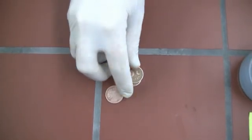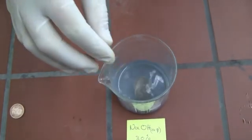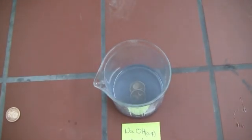Then we put the coins in a beaker with a solution of sodium hydroxide and 1.5 gram of zinc metal powder.